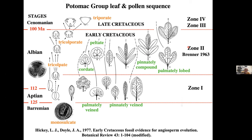Rather than trying to assign fossils to modern taxa, which had led to many errors in the early history of paleobotany, we concentrated on morphological changes through time. The pollen record shows the successive appearance of monosulcate pollen, as in gymnosperms but with angiosperm exine structure, then tricolpate pollen, then tricolporate and triporate — which is the evolutionary sequence inferred by Wodehouse, Bailey, and Takhtajan, based on comparative studies of living plants.